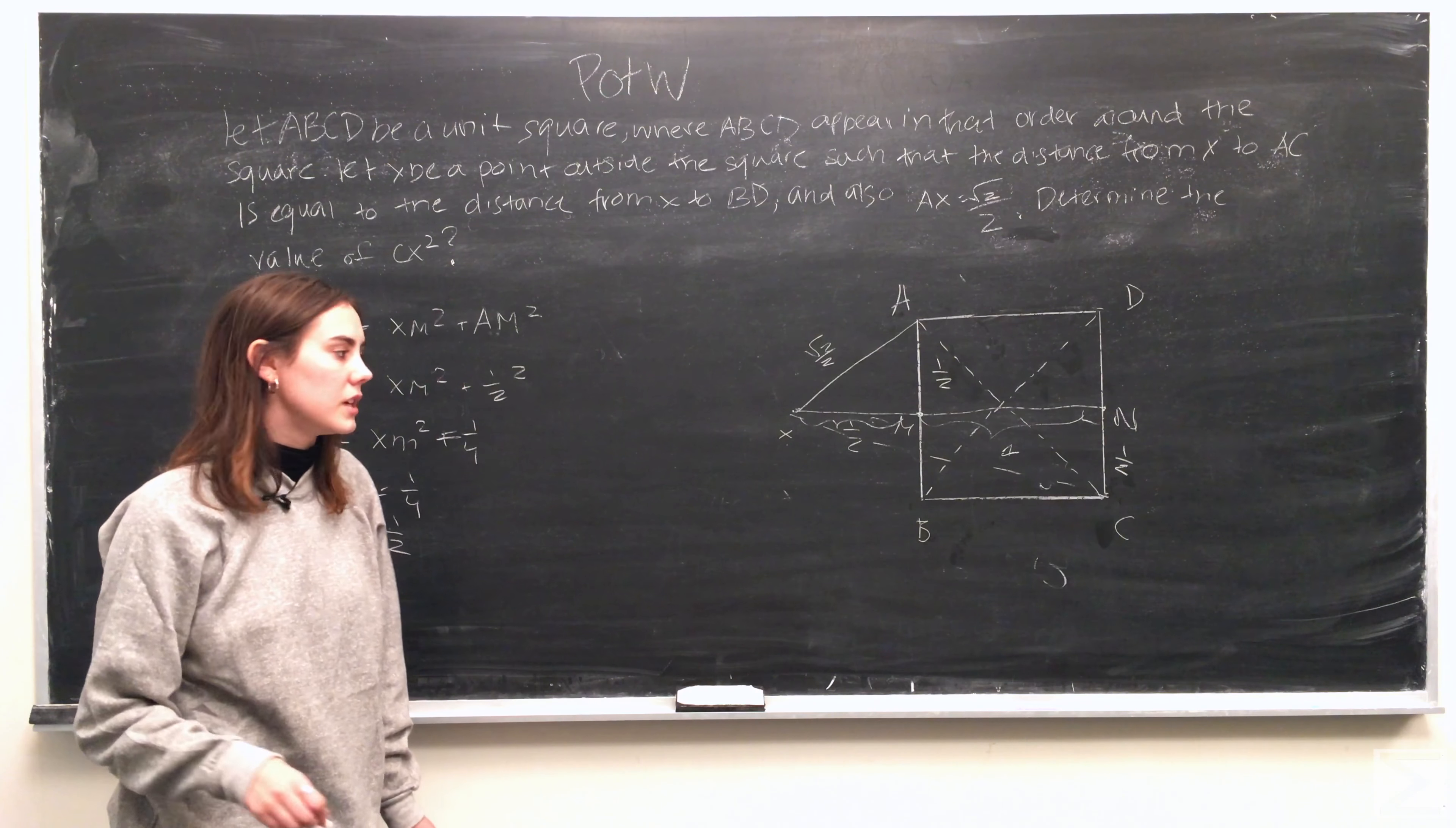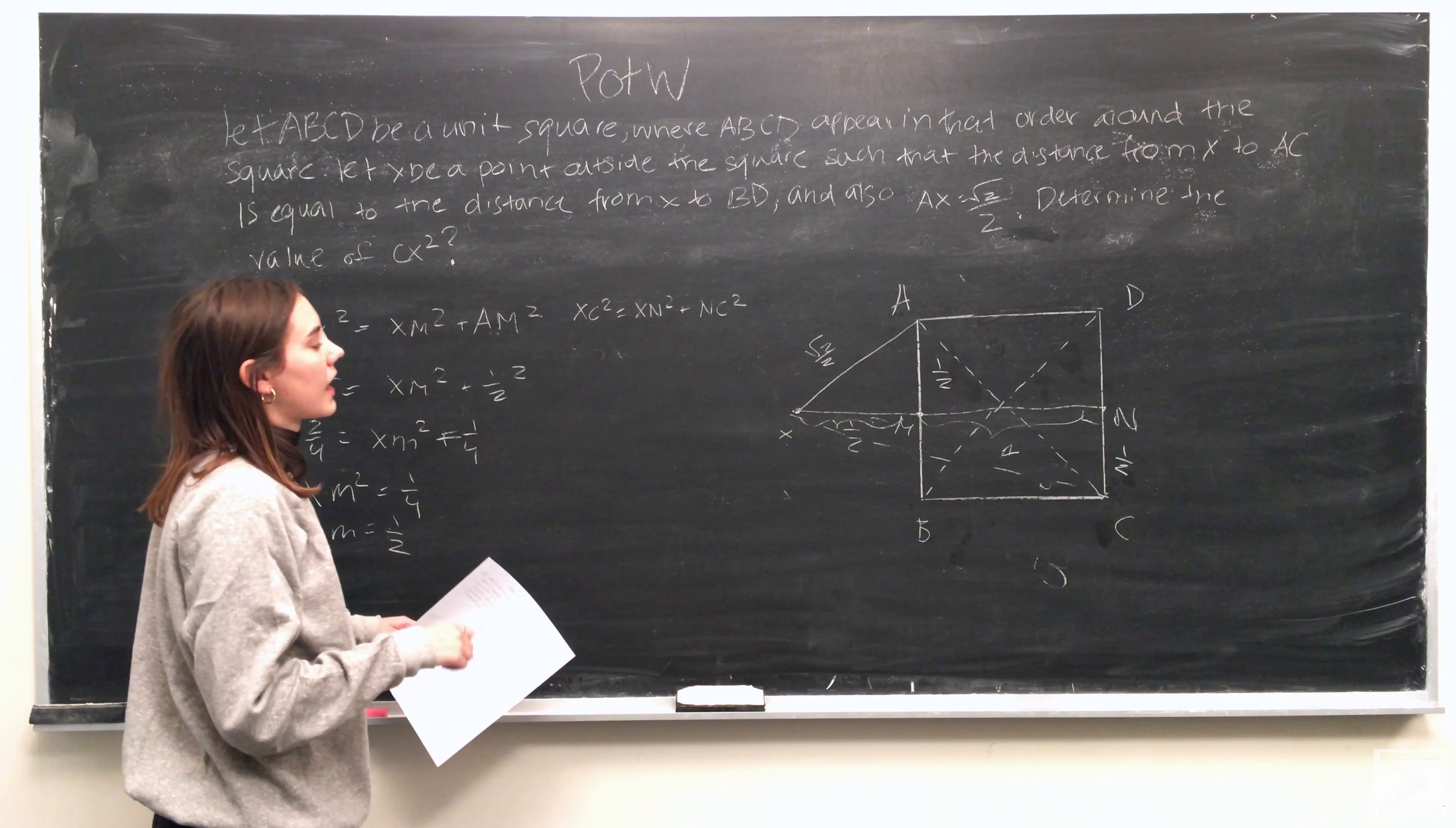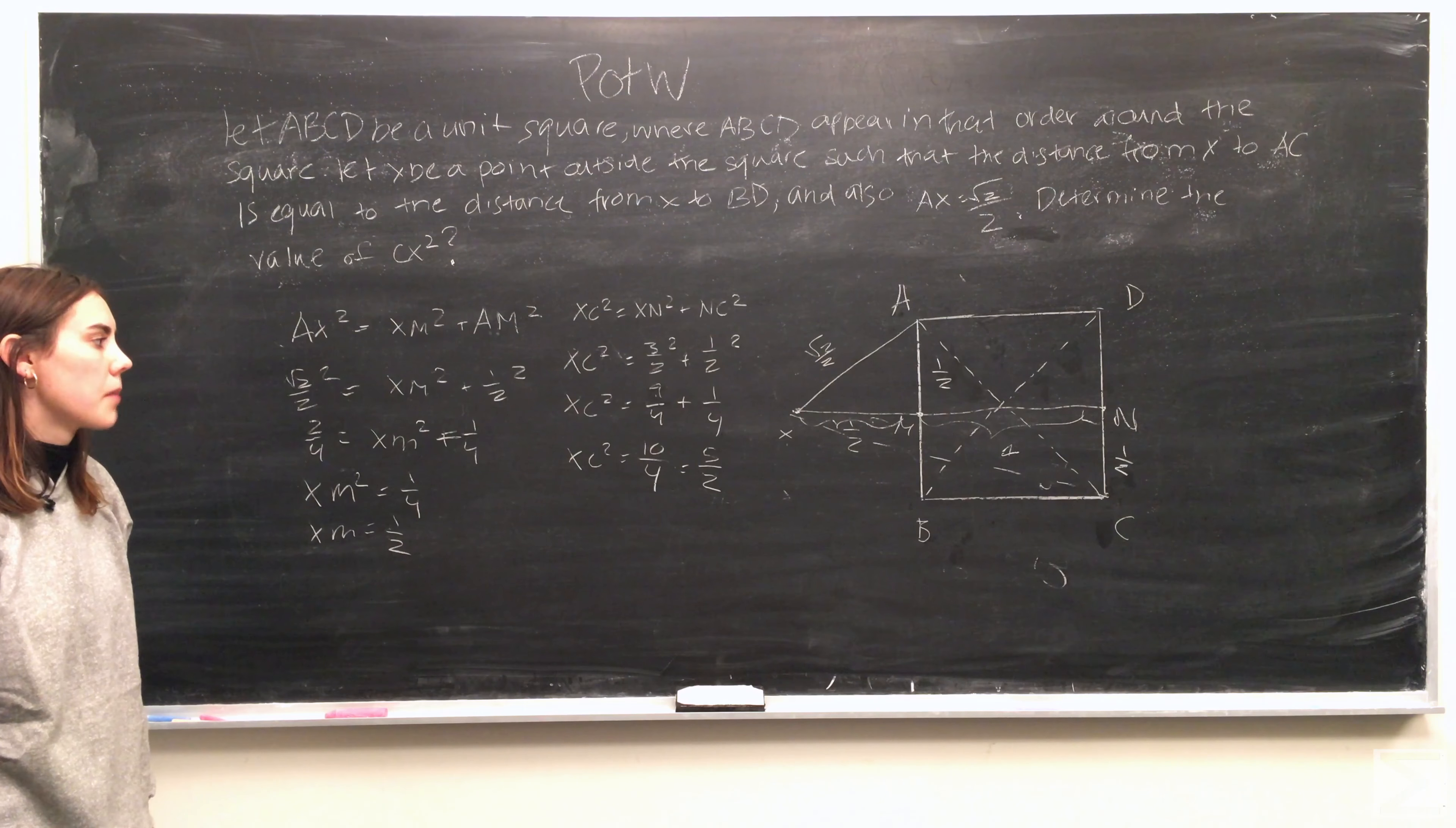And we have the other values for xn and for nc, so we can use the Pythagorean theorem again to solve for xc squared by plugging in xn squared plus nc squared and plugging in the values that we know.